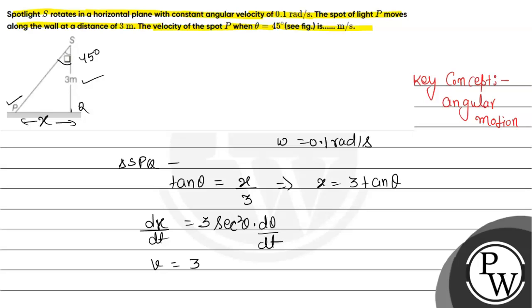It will be given as 3 into sec squared theta into d theta by dt, which means angular displacement with respect to time, that is angular velocity.